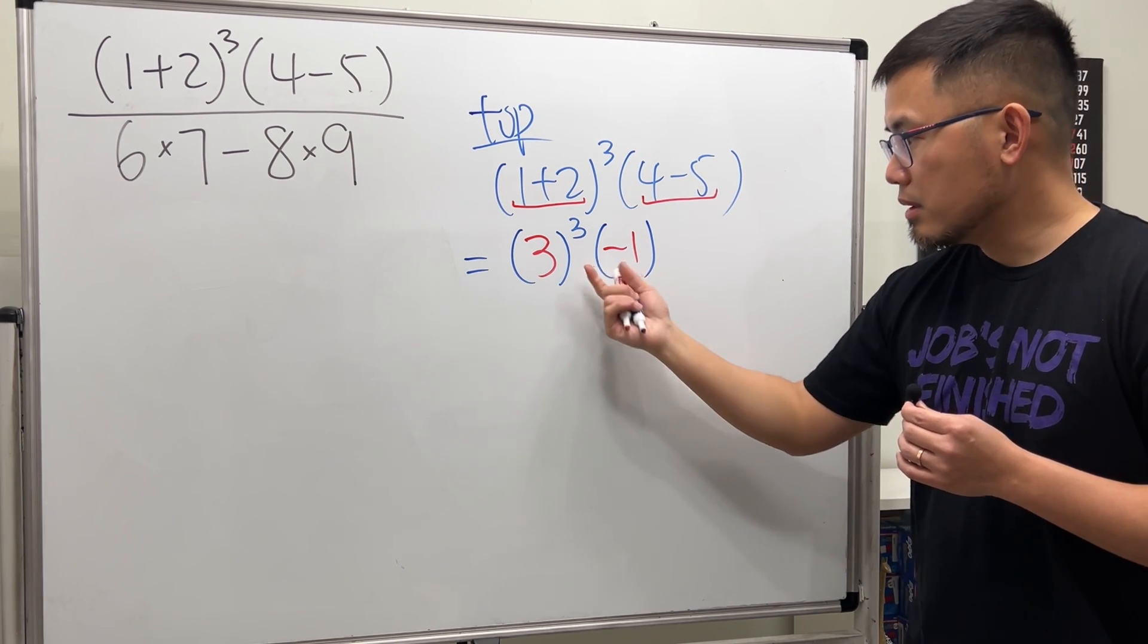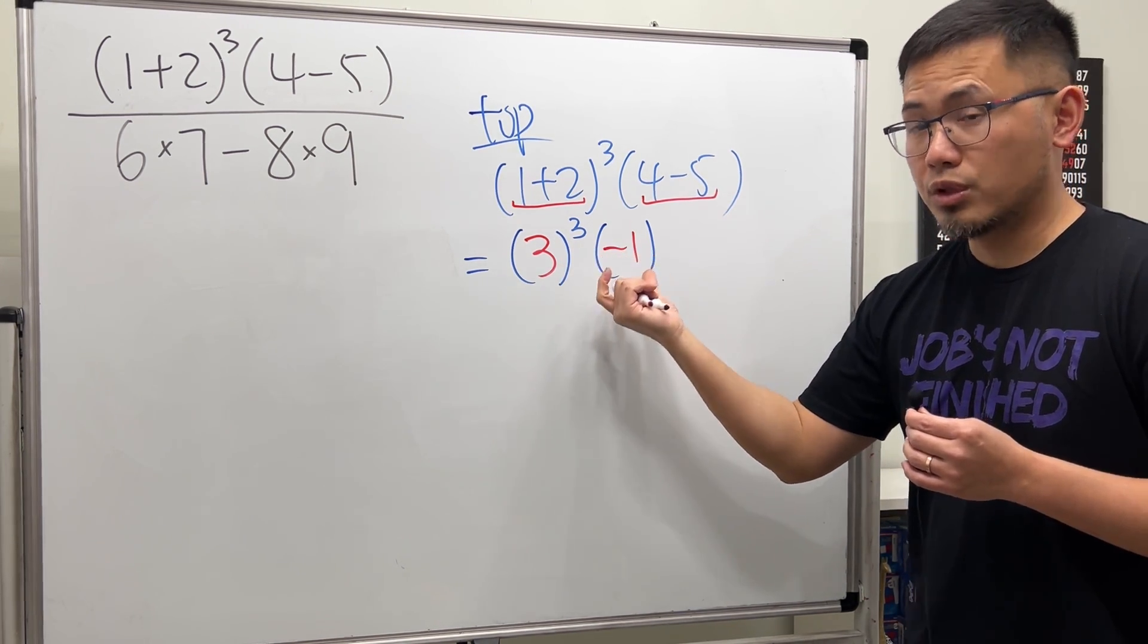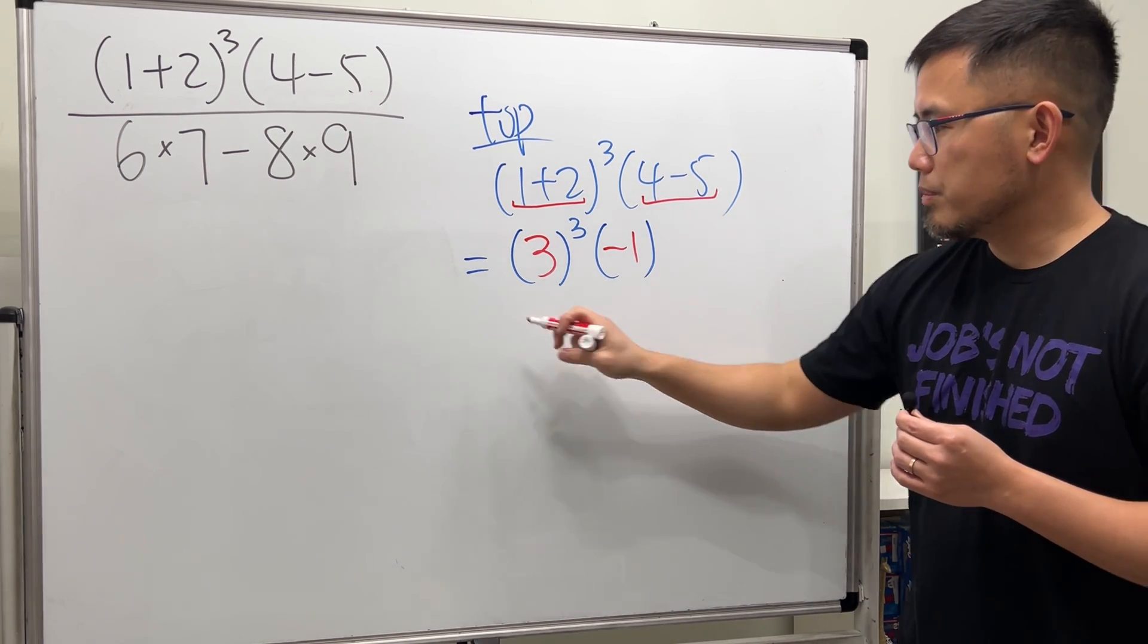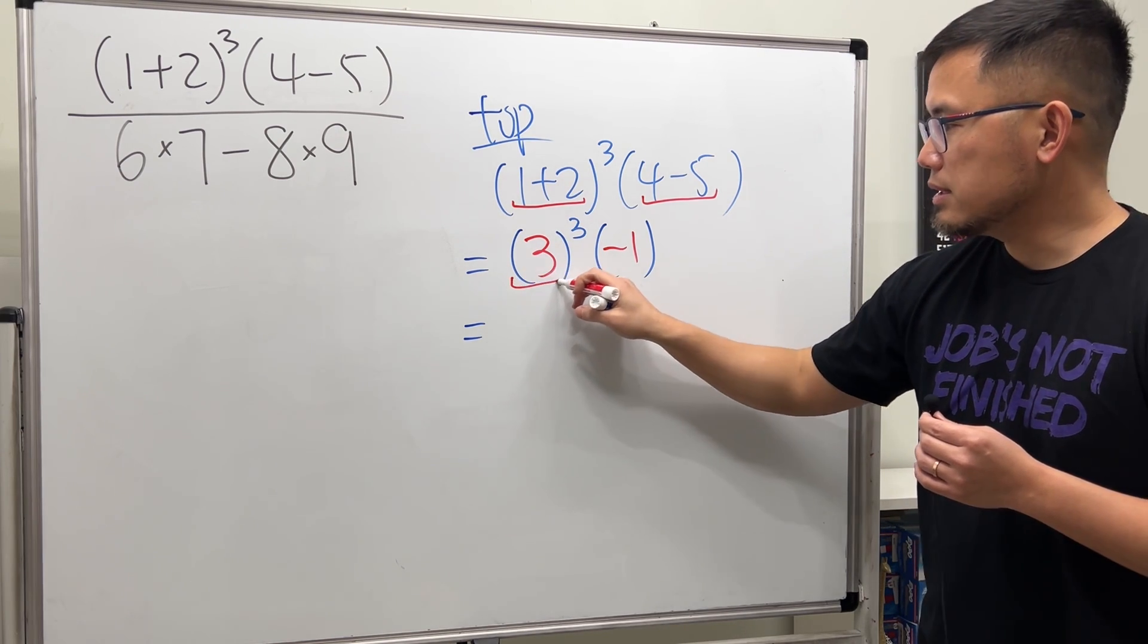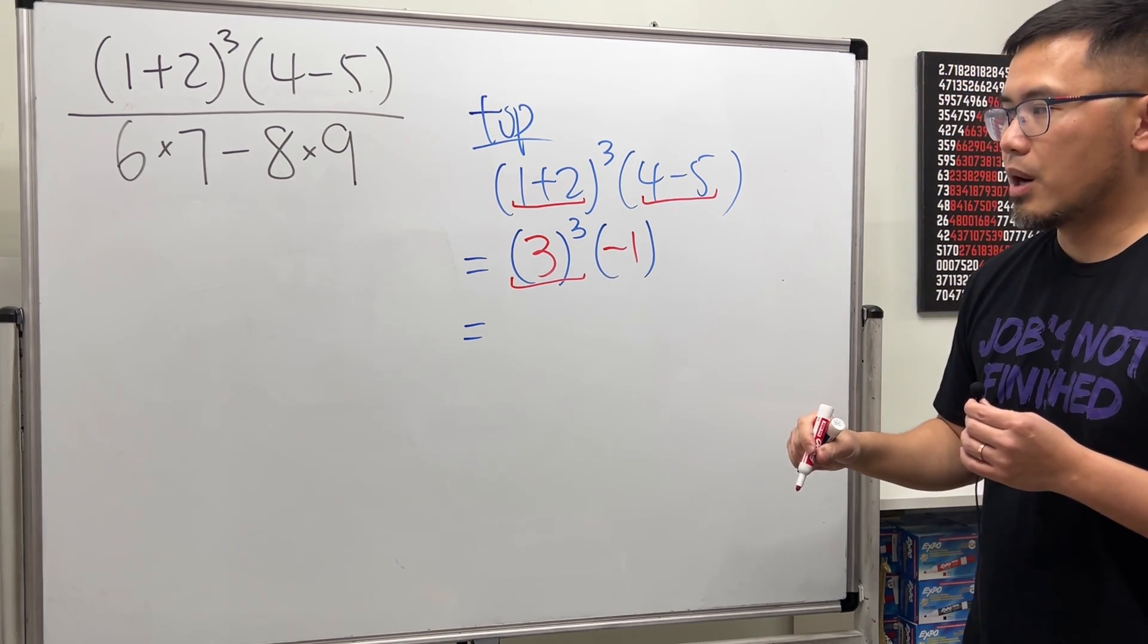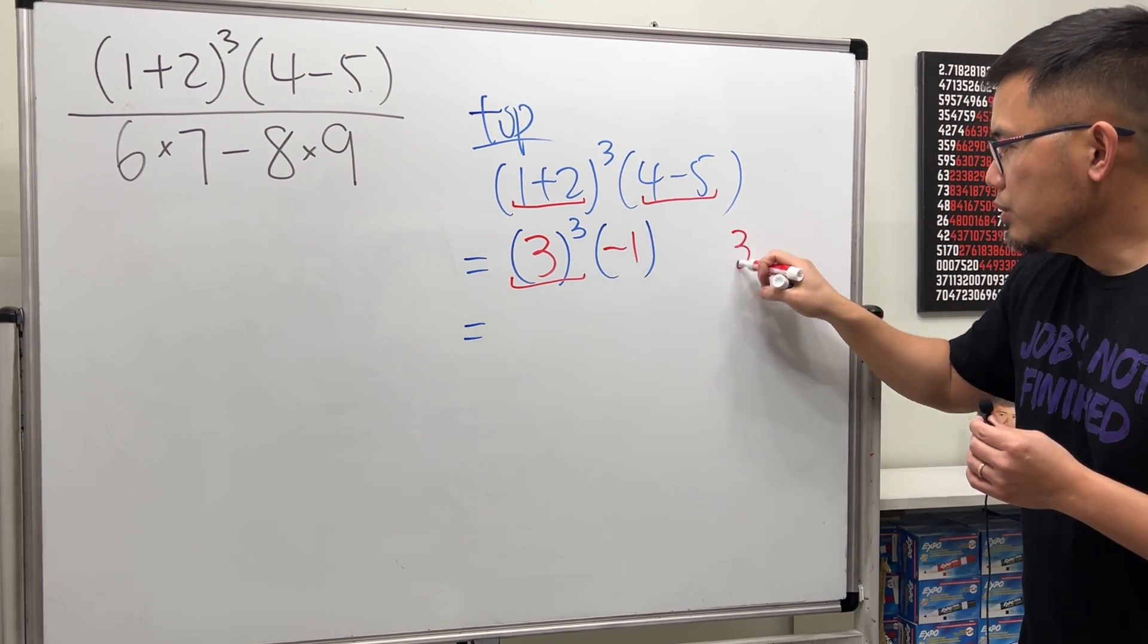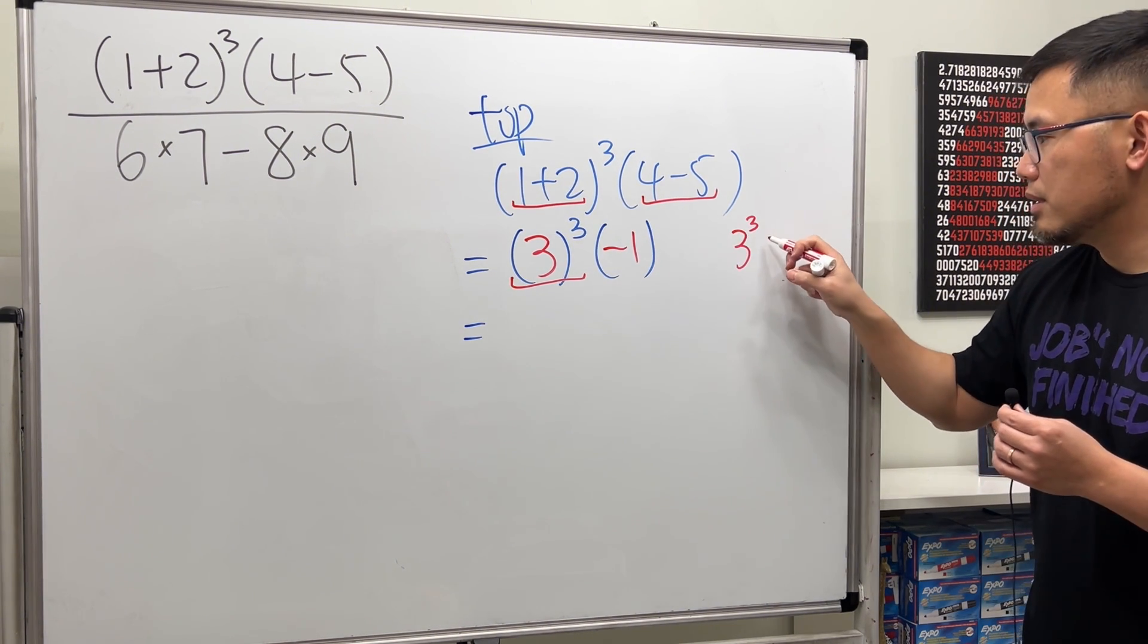Now we have 3³ and then parentheses. Now, right here means we multiply by negative 1. So exponent next, we are going to work this out, 3³.